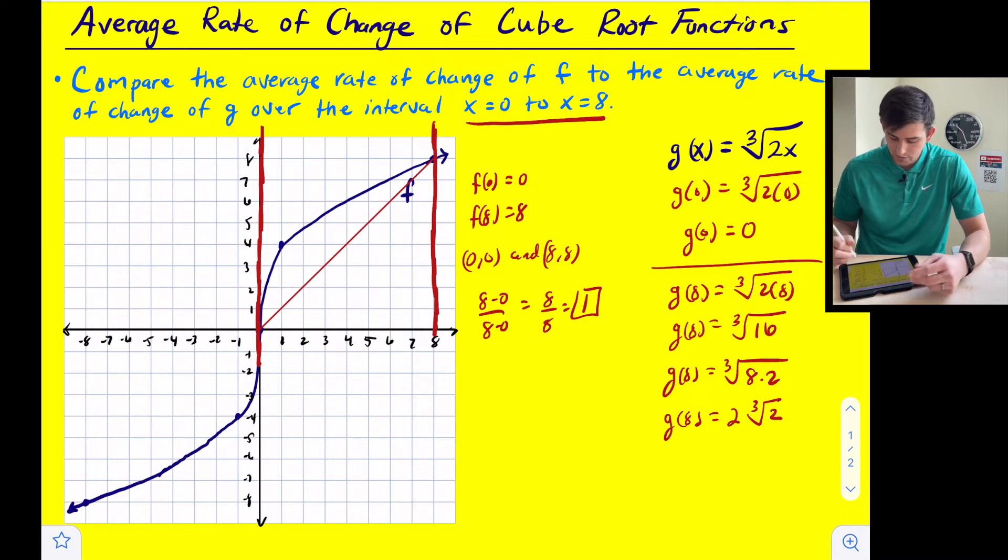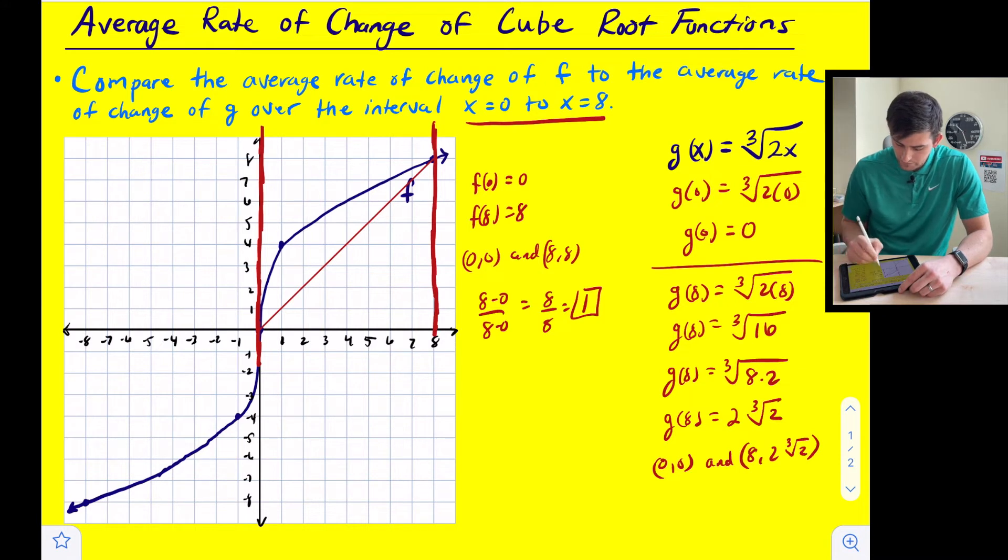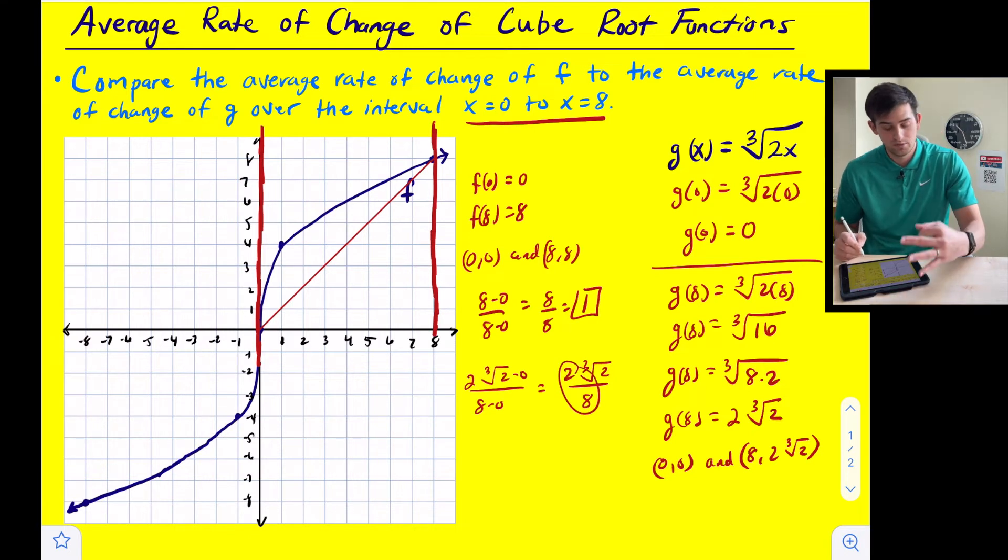Okay, so now we have our two points, 0, 0, and 8, 2 cube root of 2. So now if we find the slope, we can do 2 cube root of 2 minus 0 over 8 minus 0. So we get 2 cube root of 2 over 8.